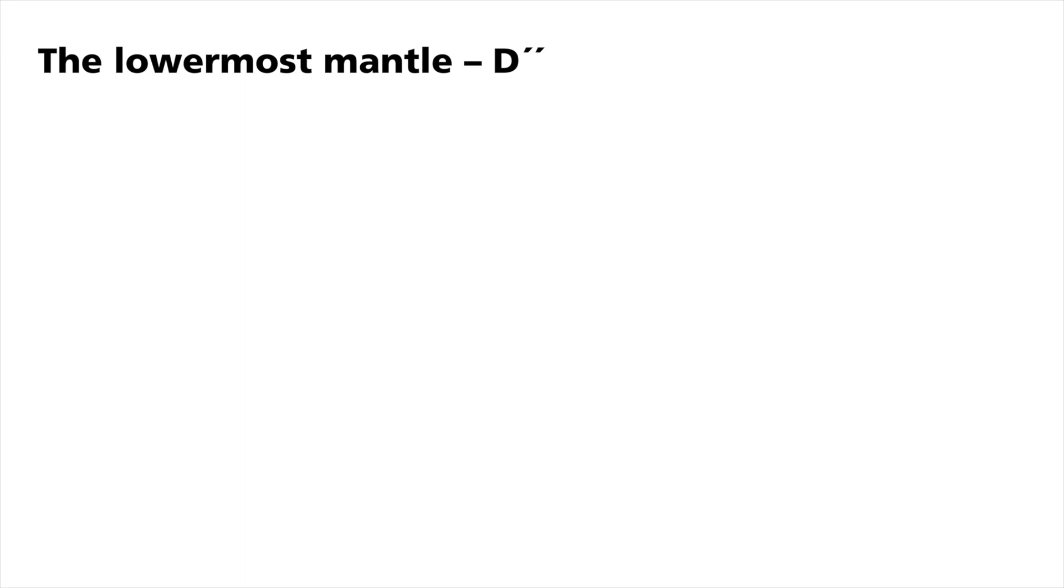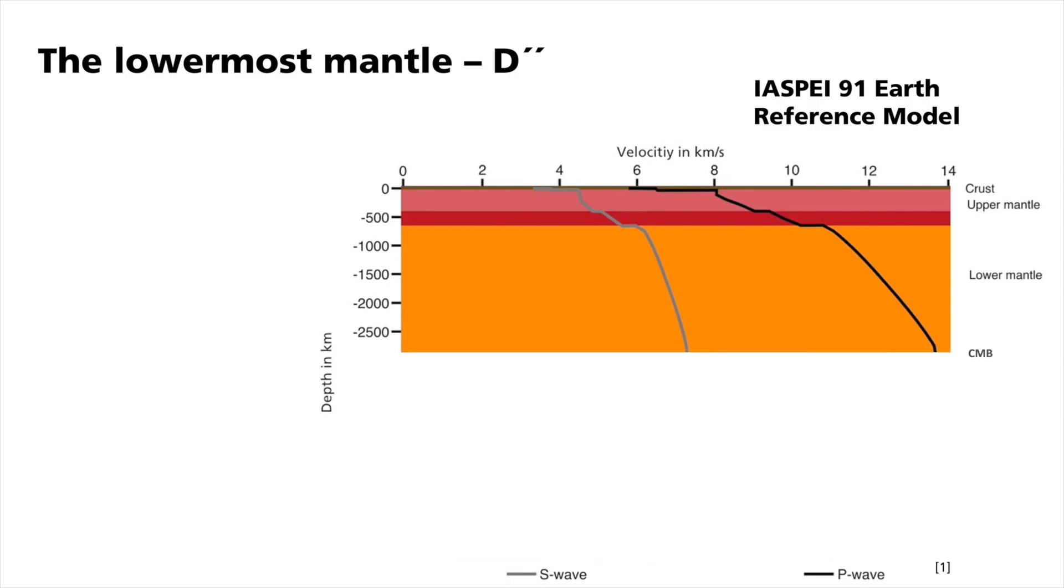The Earth consists of five major concentric layers: the crust, the upper and lower mantle, and the outer and inner core. They differ in their elastic properties, as for example the seismic velocities of P and S waves.